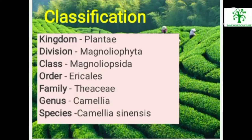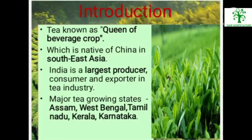Classification of Tea. Kingdom: Plantae. Division: Magnoliophyta. Class: Magnoliophyta. Order: Ericales. Family: Theaceae. Genus: Camellia. Species: Camellia sinensis.